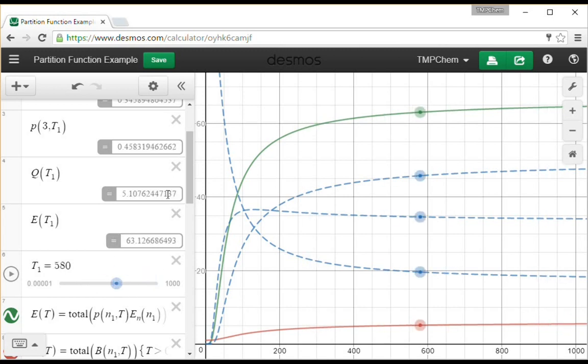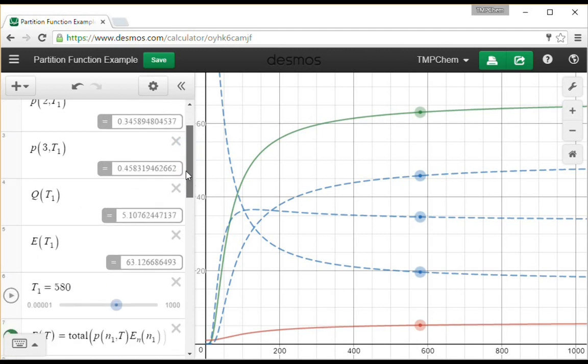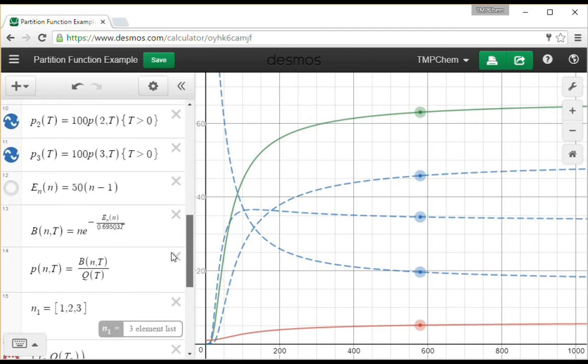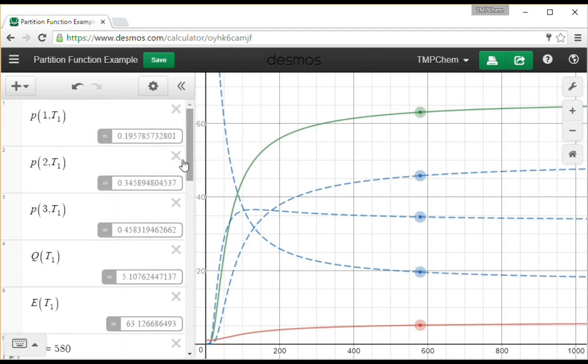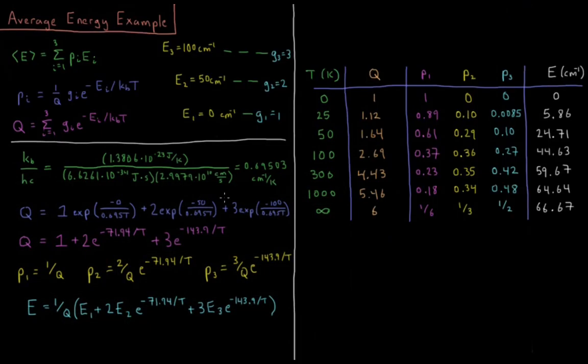So you can play around with this if you like. You can put in different energies, different energy levels, see all those things as much as you like. This is just one example of one kind of system to give us an idea of what are the actual numerical values that result and how do we actually do an example for calculating this average energy in practice for a system where we have a few energy levels.